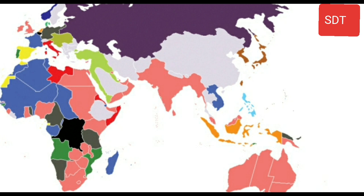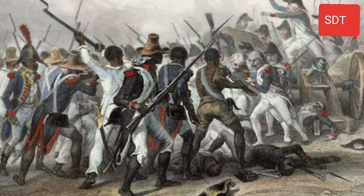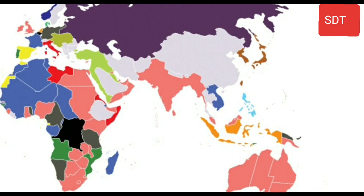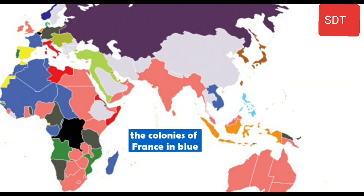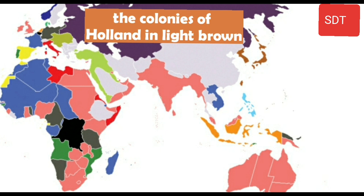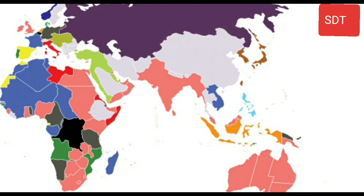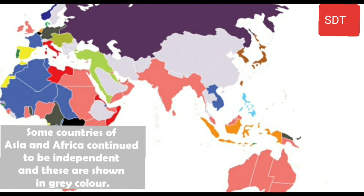In this chapter, we will read about how these countries fought for freedom. On this map, you can see the colonies of Britain in pink color, the colonies of France in blue, the colonies of Holland in light brown, and some countries of Asia and Africa that remained independent are shown in grey color.